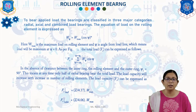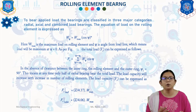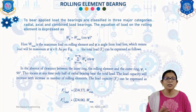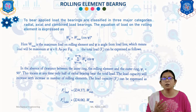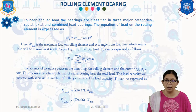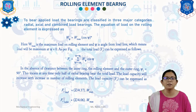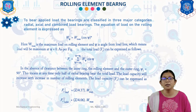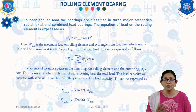In the absence of clearance between the inner ring, the rolling element, and the outer ring, ψ₁ = 90°. This means at any time only half of the radial bearing bears the total load. The load capacity will increase with an increase in the number of rolling elements. The load capacity F_r can be expressed as: for ball, F_r = Z / 4.37 × W_max.